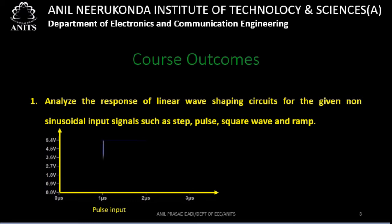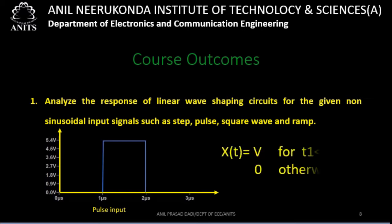The next type is a pulse input signal. x(t) = V for an interval, say t1 to t2 — for example, t1 = 1 microsecond and t2 = 2 microseconds. The input signal exists only during that time duration; for all other time instances the input is 0. A pulse means it exists only for a certain duration; for all other durations it is 0.